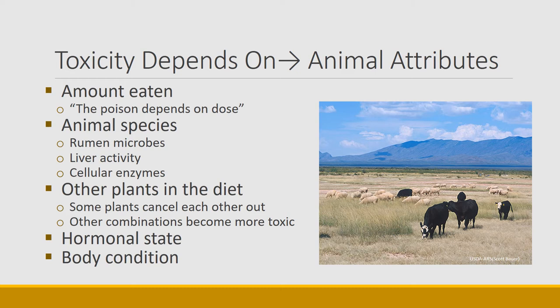Mammal species is important because different species have different rumen microbes, different liver activities, and different cellular enzymes. For example, cattle and sheep differ — there are many plants, such as tall larkspur, that are not very toxic at all to sheep but highly toxic to cattle. On the other hand, oxalates are highly toxic to sheep and not very toxic to cattle.